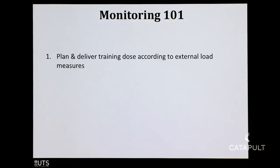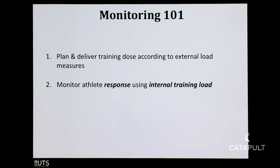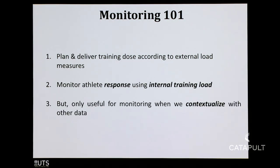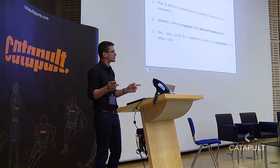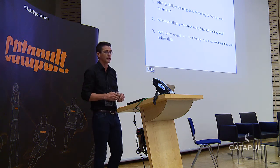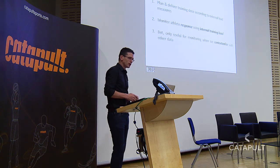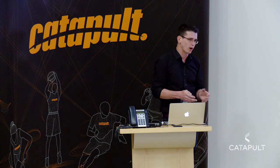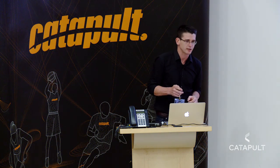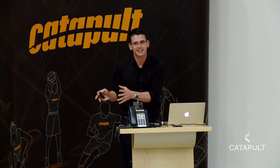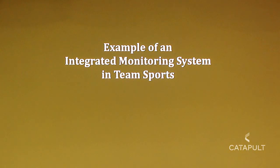A quick summary — three main points: we should plan and deliver training dose according to the external training load; we should monitor the athlete response to that load from the internal responses; and these are only useful for monitoring athletes if we contextualise that with other data. That's training theory and monitoring 101.